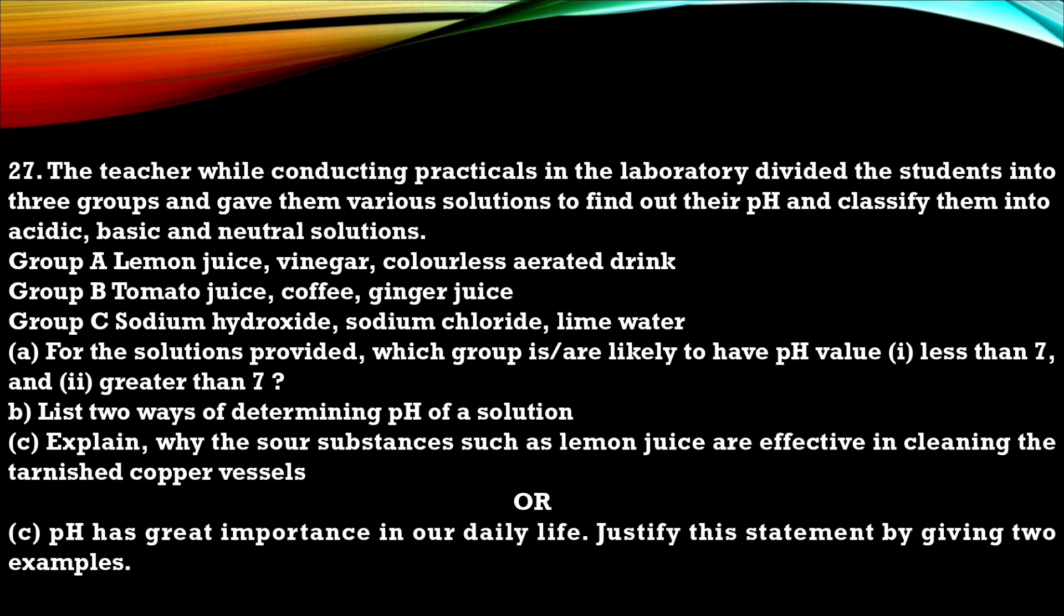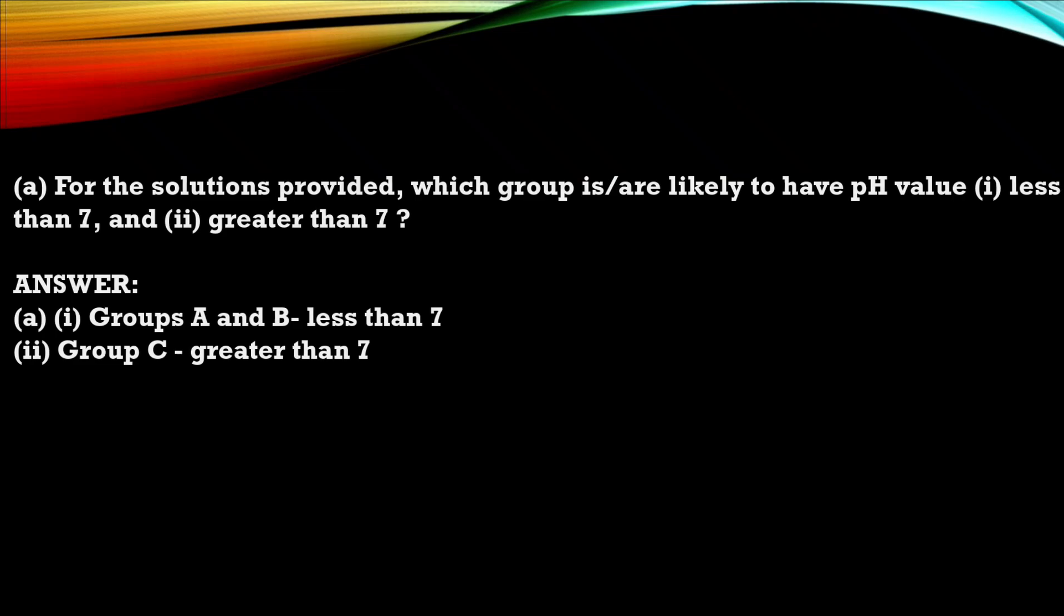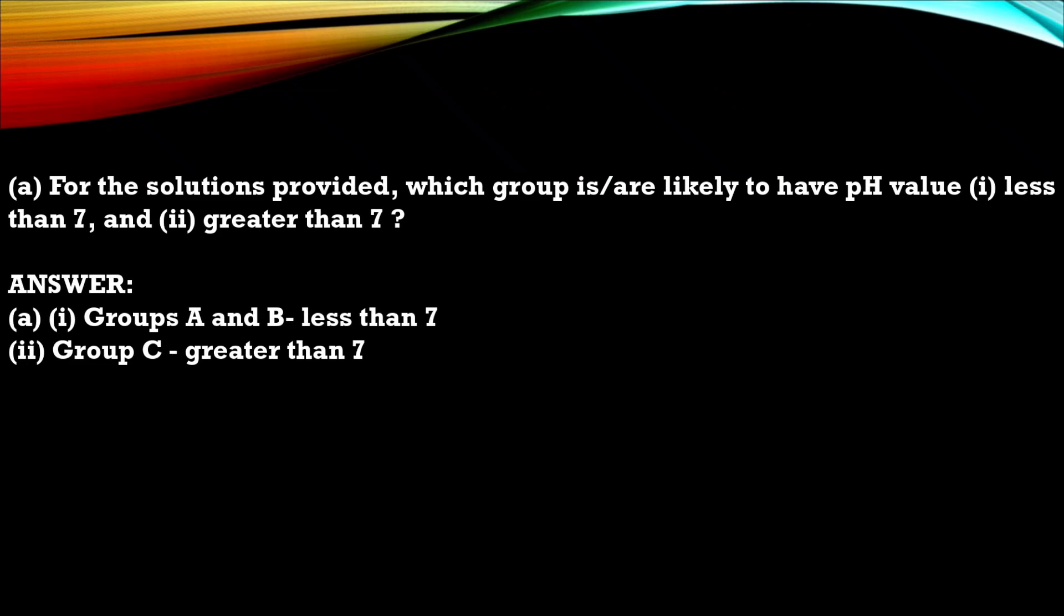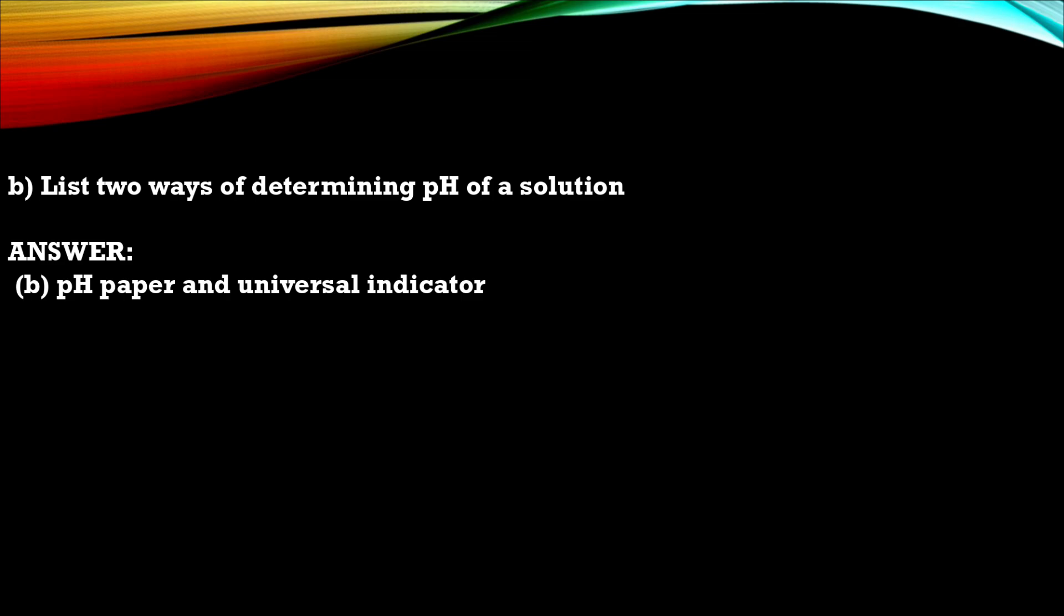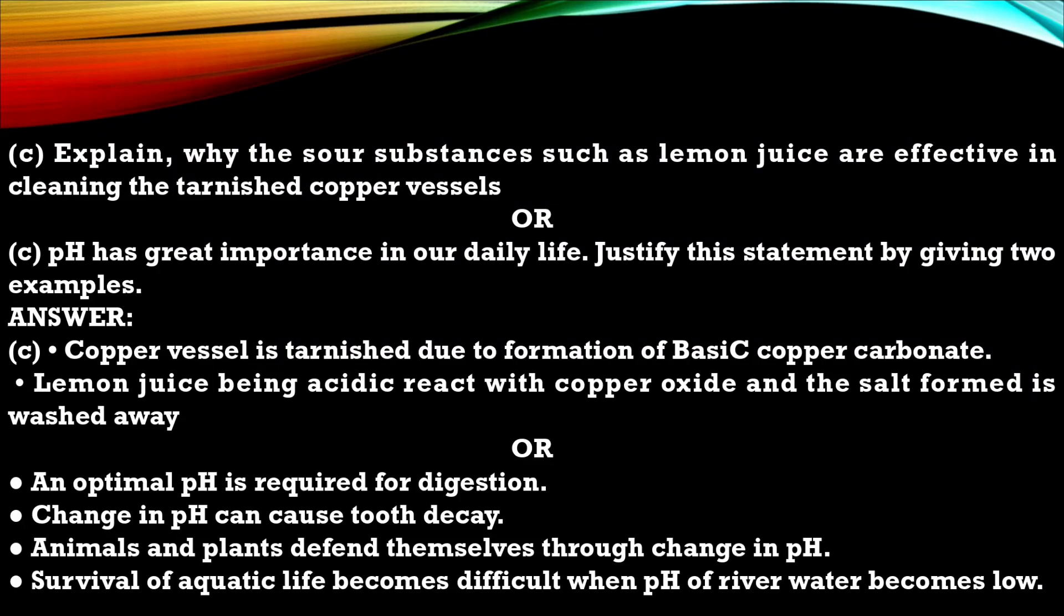C. Explain why sour substance such as lemon juice are effective in cleaning the tarnished copper vessel. OR pH has great importance in our daily life. Justify this statement by giving two examples. So this is the answer for A, then answer for B. There are two ways of determining pH of solution. Then answer for C. Here you are having two options.